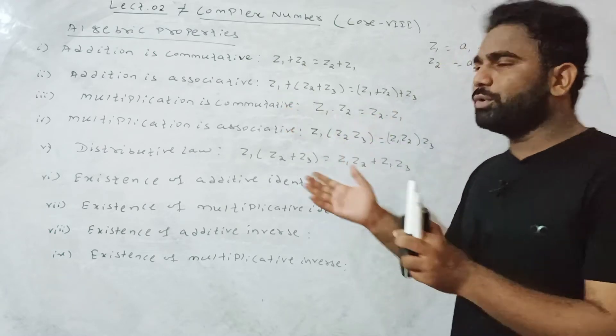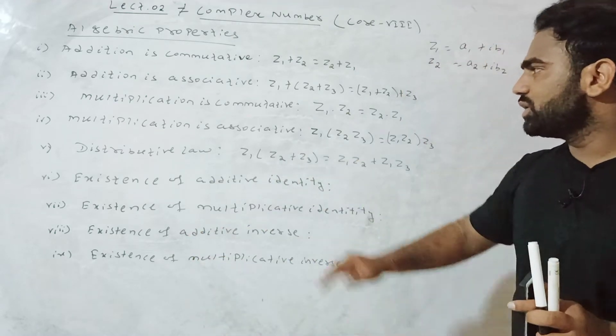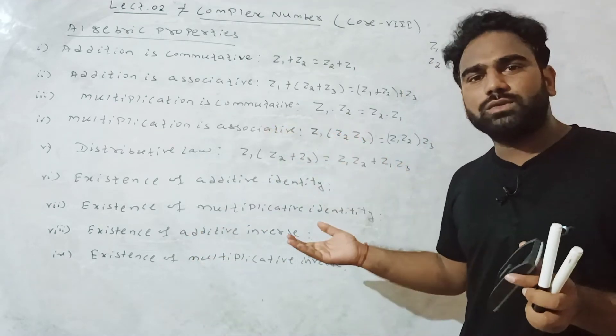Multiplication is also commutative. Z1 into Z2 equals Z2 into Z1.